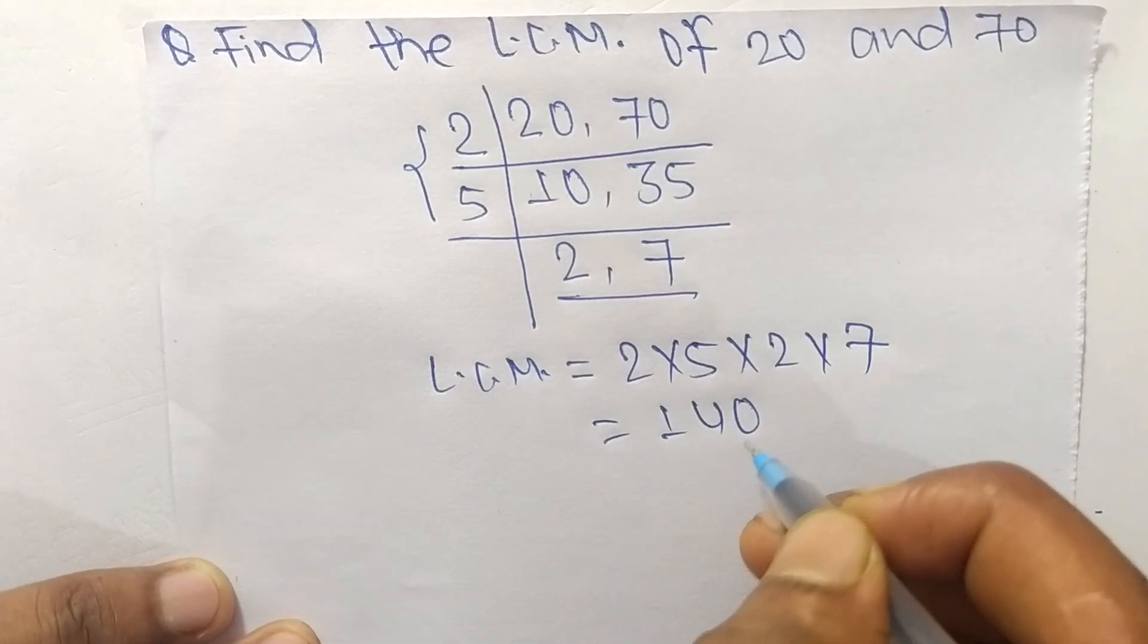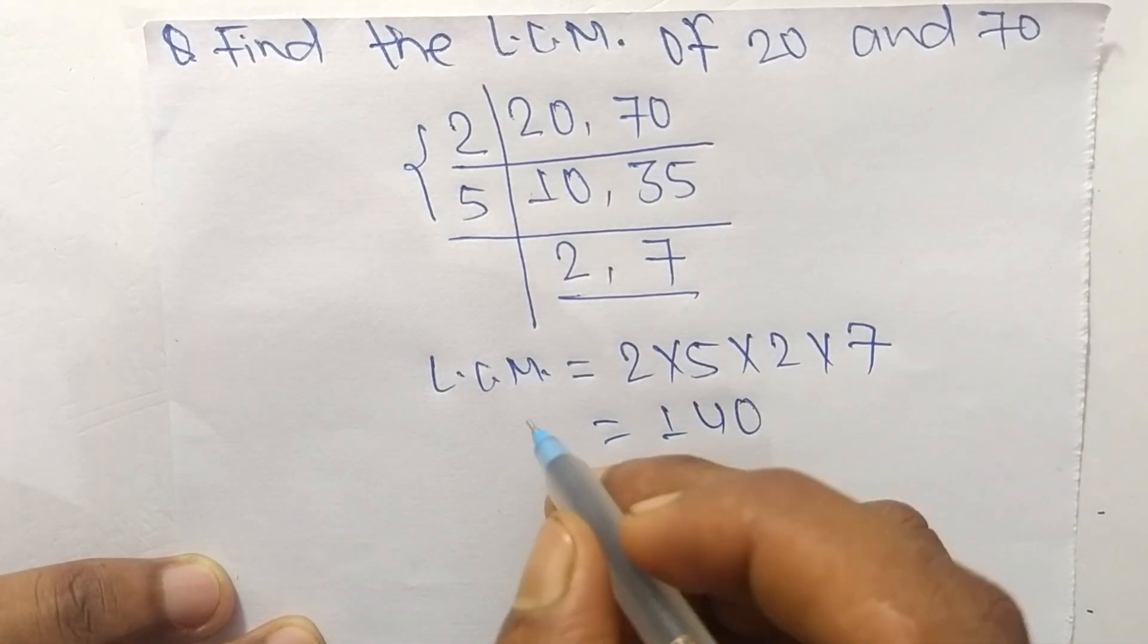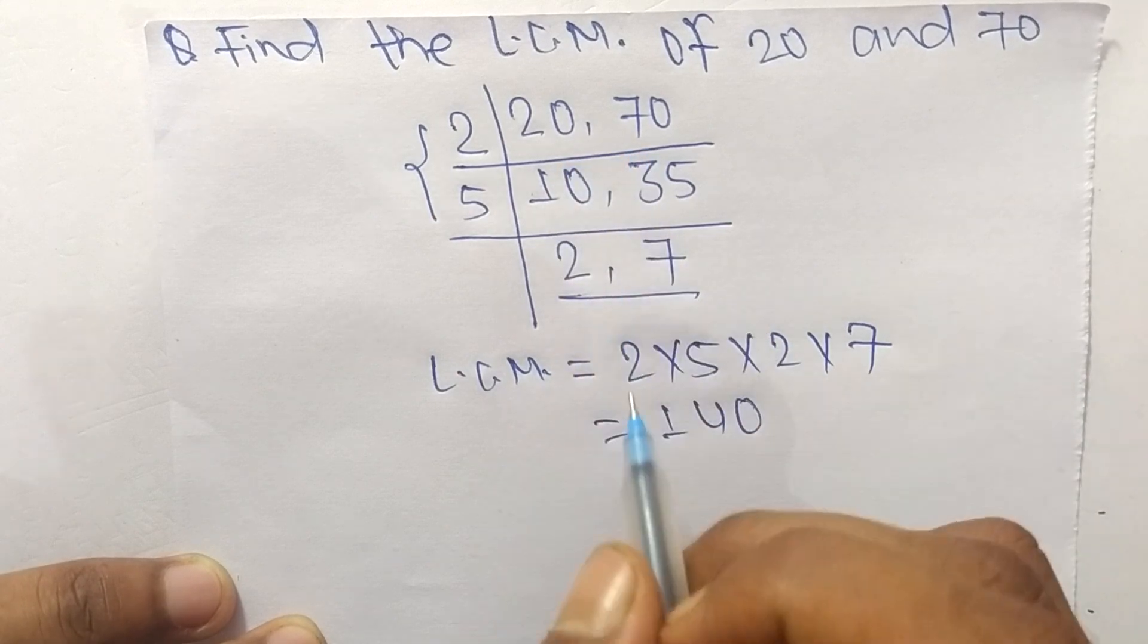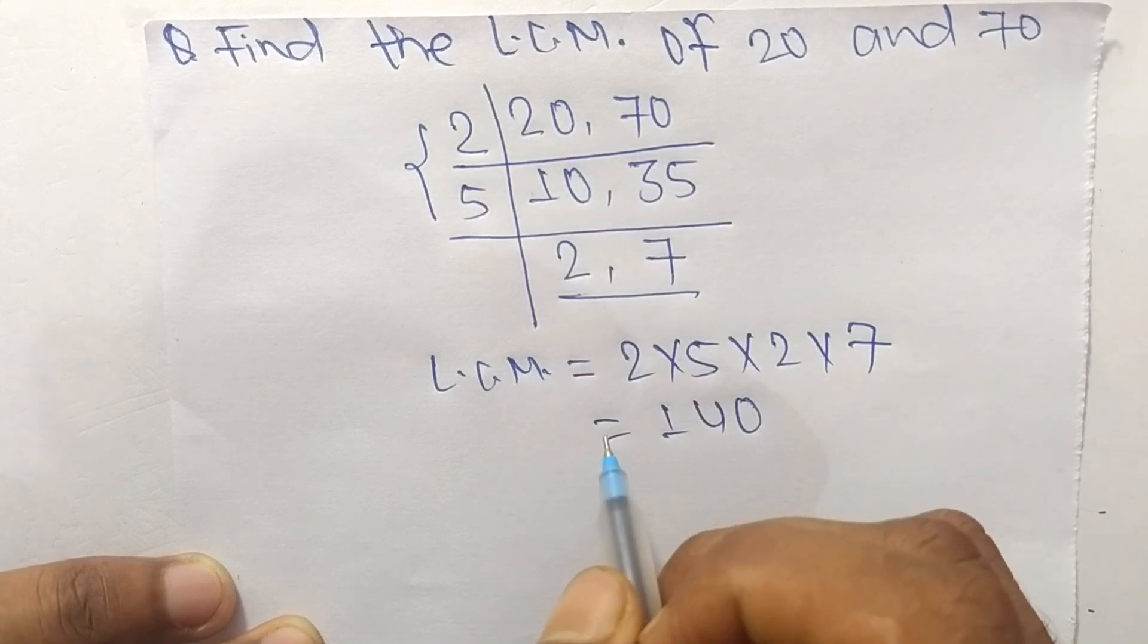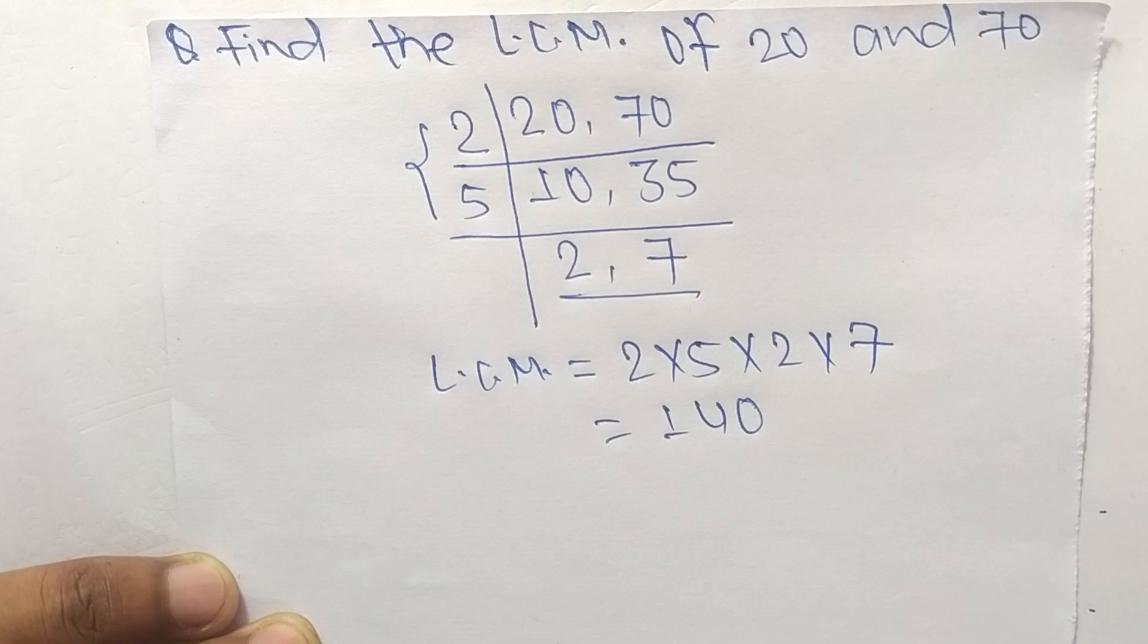140. So 140 is the LCM of 20 and 70. This much for today and thanks for watching.